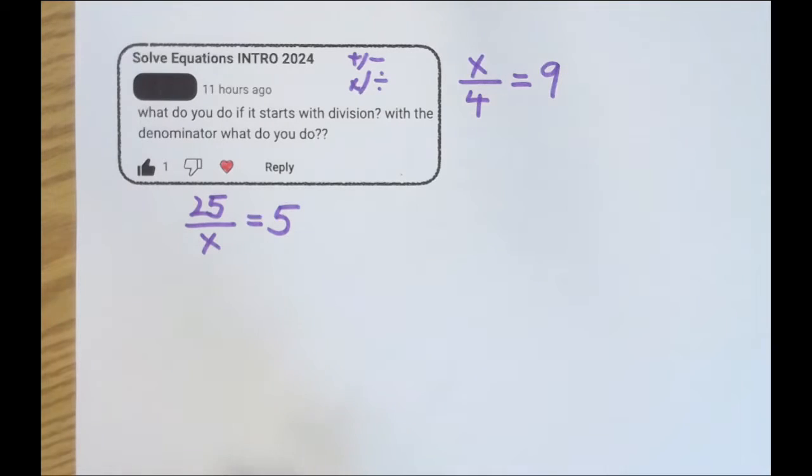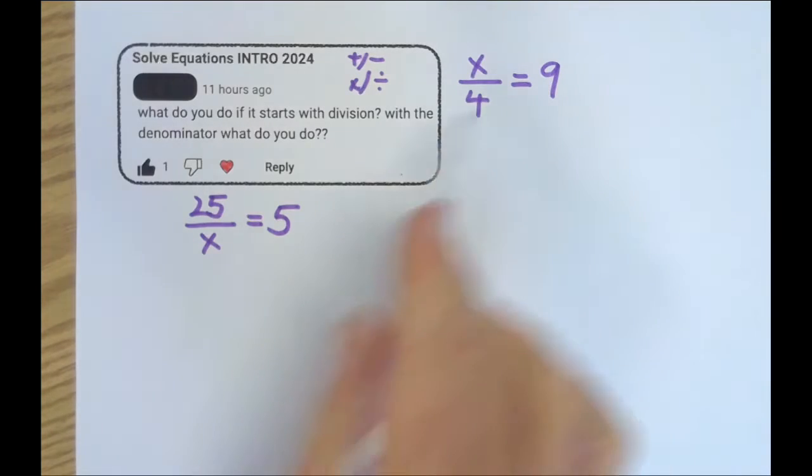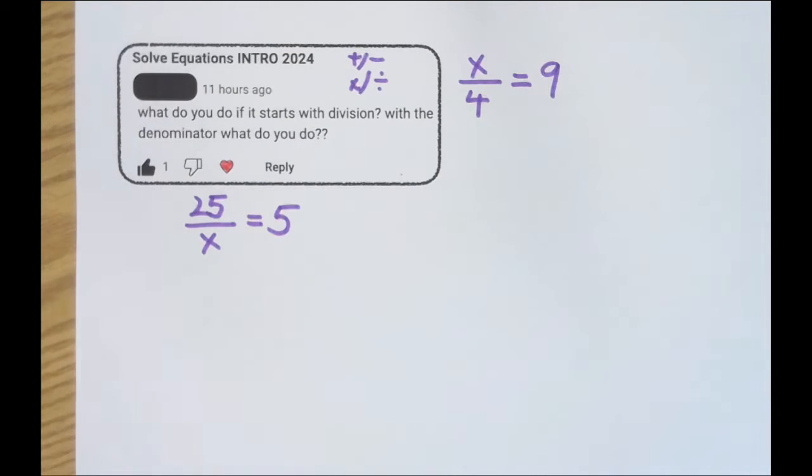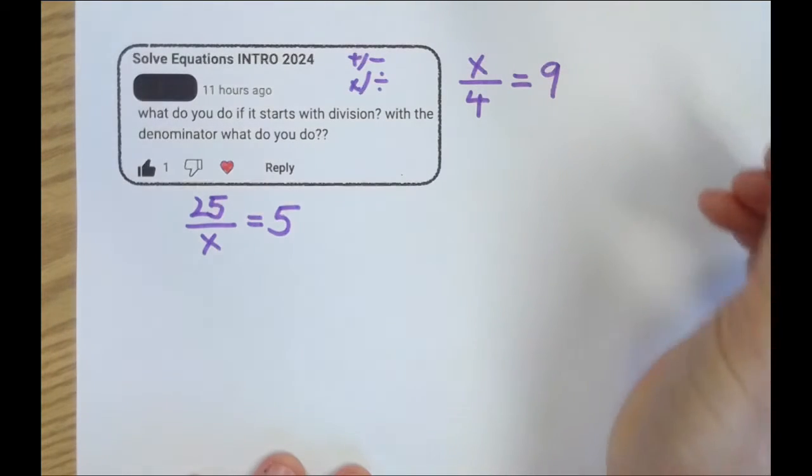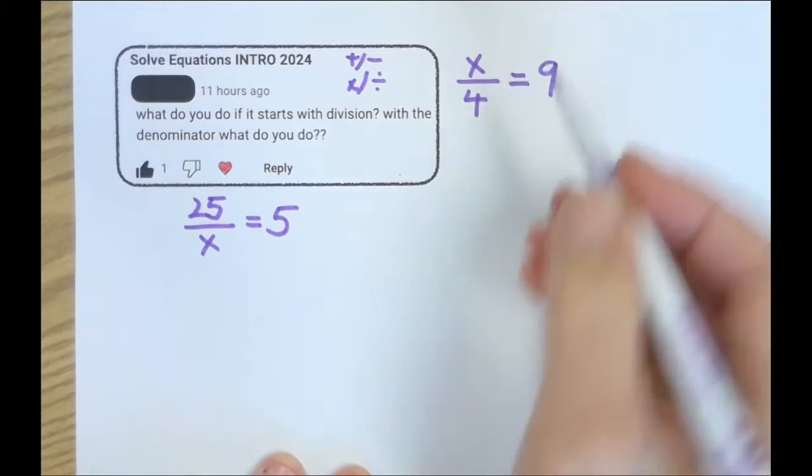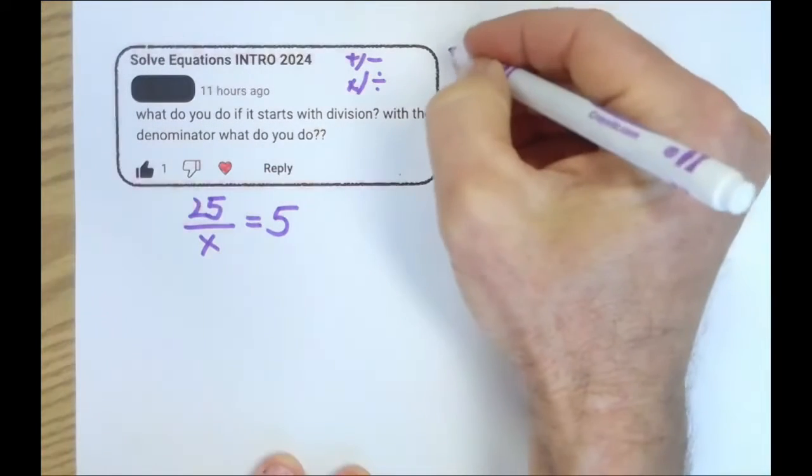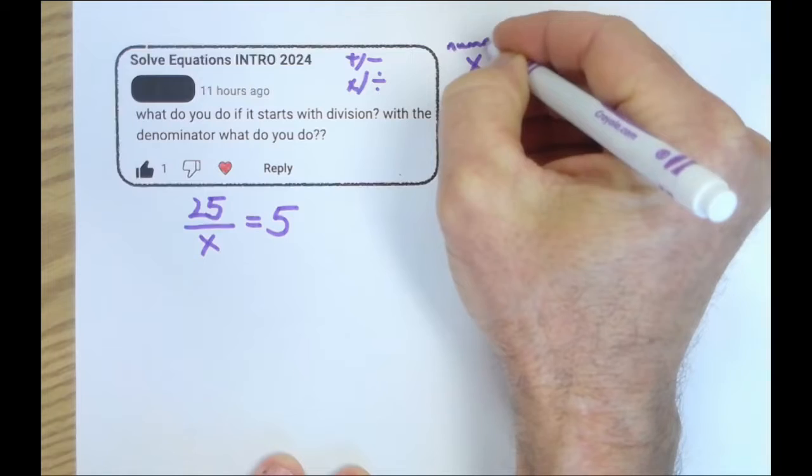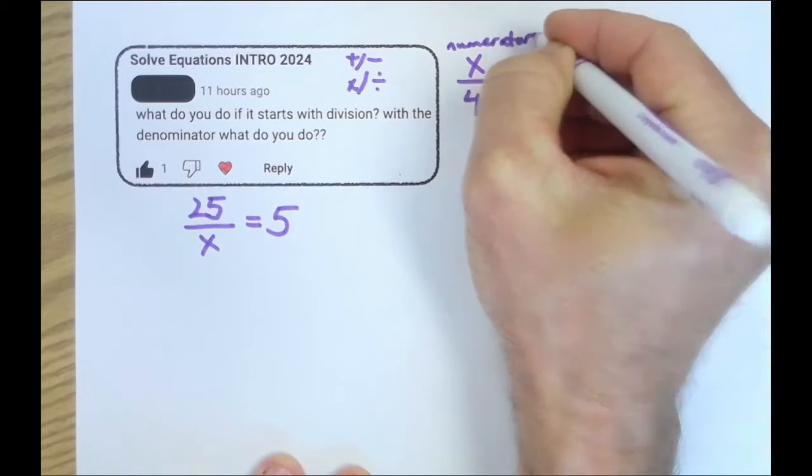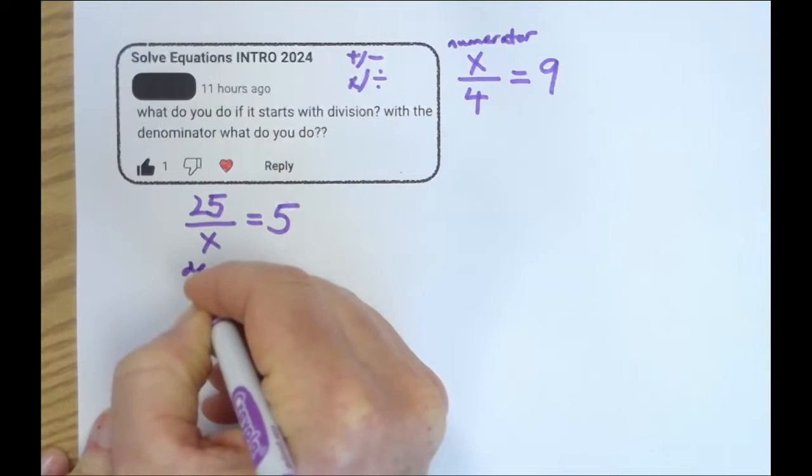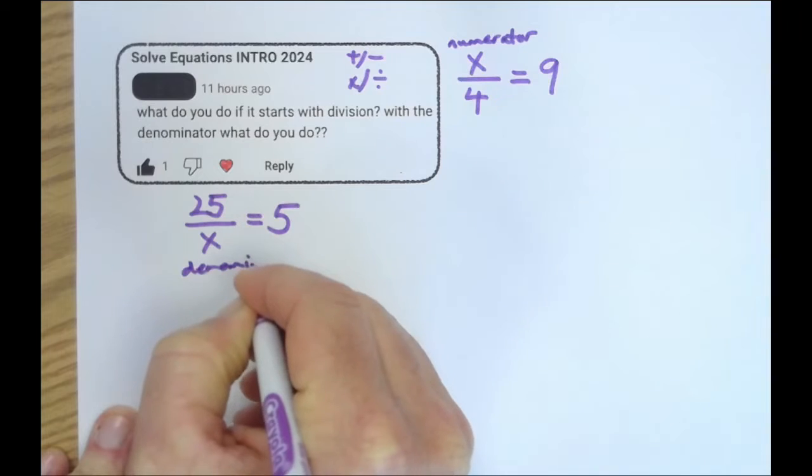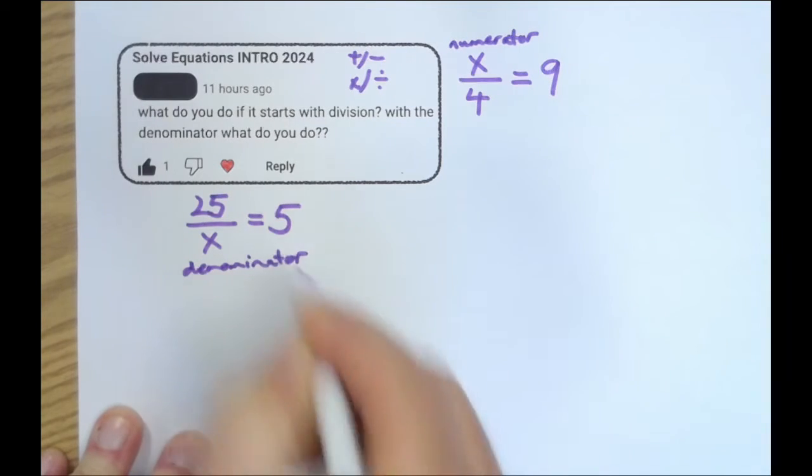So, short answer in response to that, here are two examples of what you could mean, situations you could encounter. I could have the top, the numerator, be a variable. Or, you guessed it, I could have the denominator be a variable. We'll just use x to keep it simple.